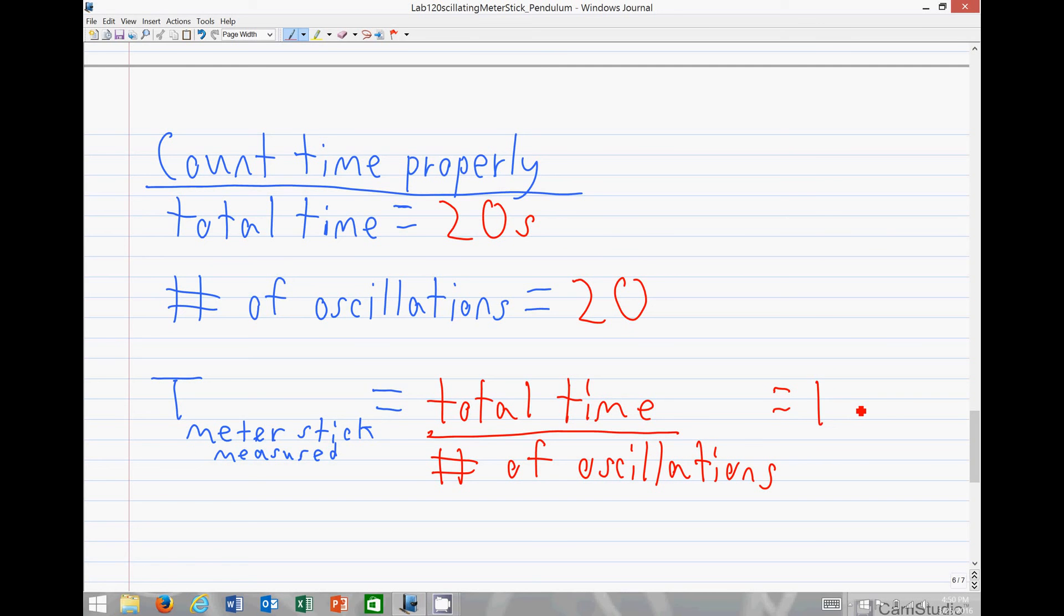Then the period of the meter stick or other system is total time divided by the number of oscillations. In this case, one second per oscillation, exactly as we expect.